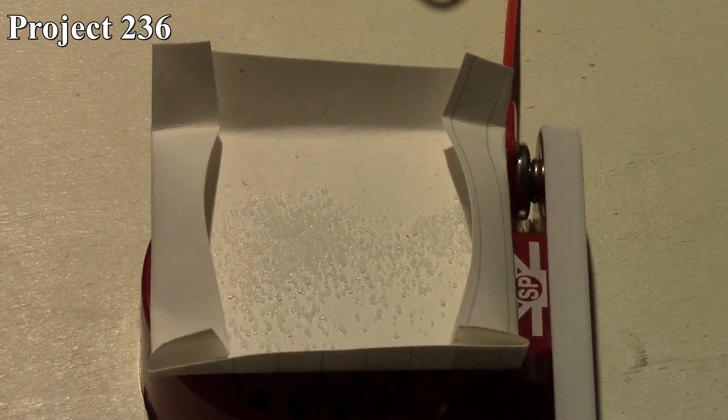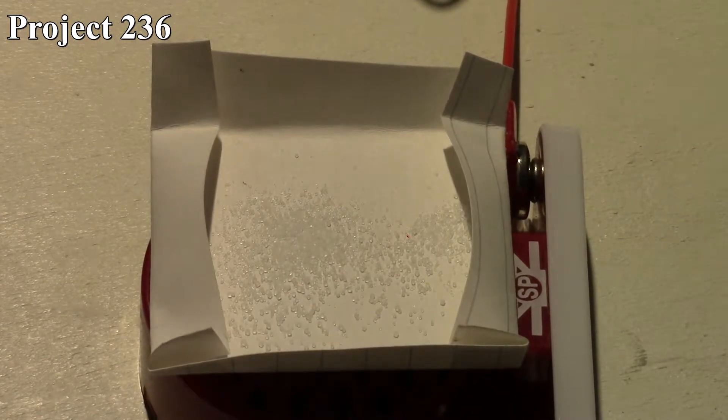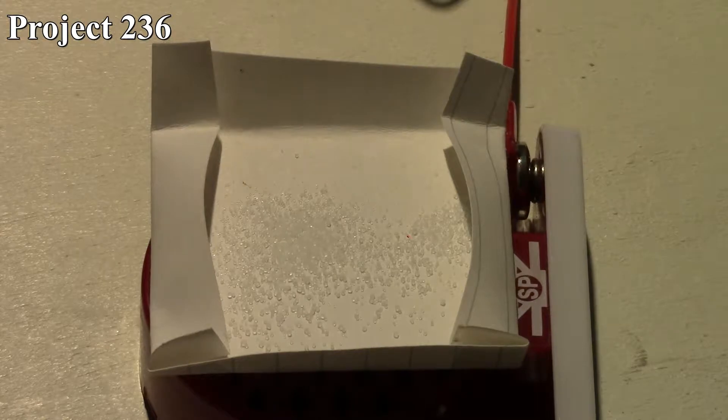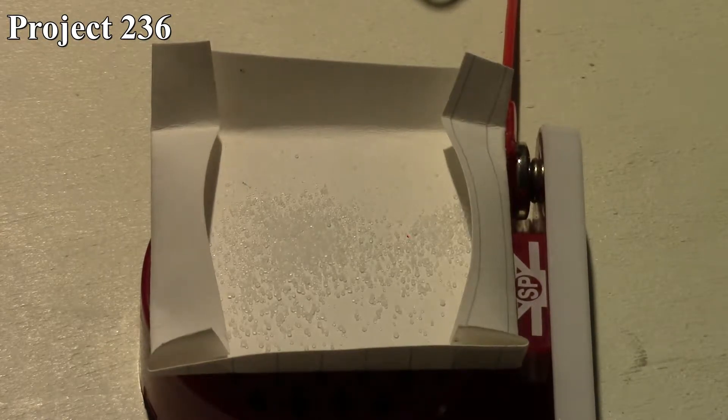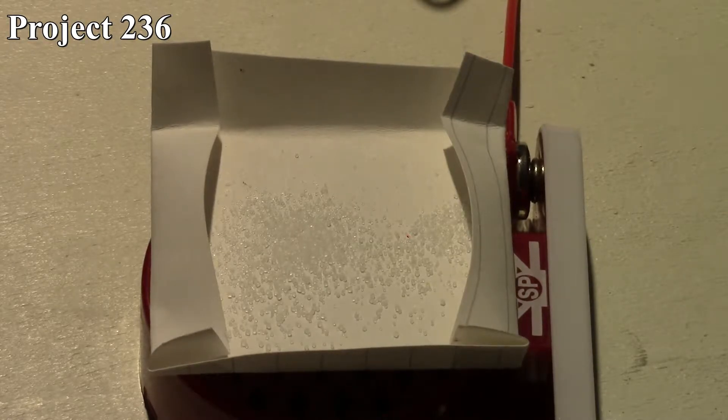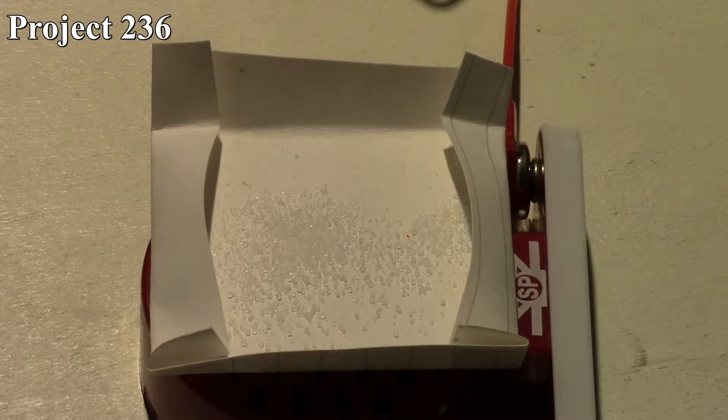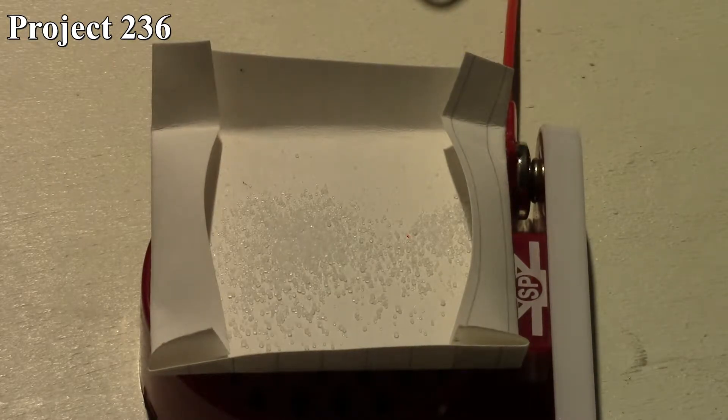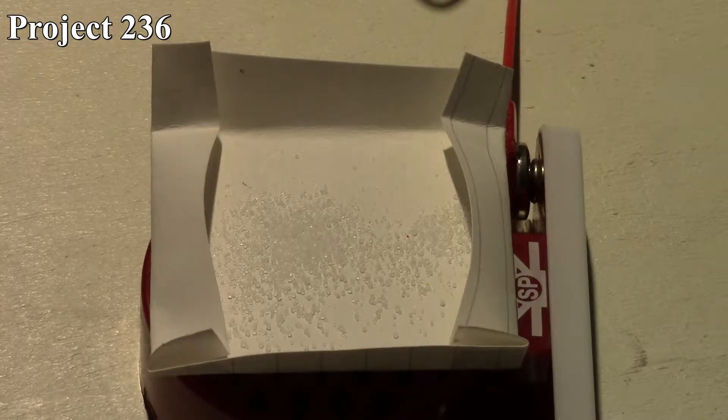We're not going to focus too much on the circuit because we've seen this kind of circuit before. What we're going to look at is the speaker. We take our little tray with salt, put some salt in there, and put it on top of the speaker. I'm going to see if I can zoom in on that since we're really only paying attention to what's happening there.